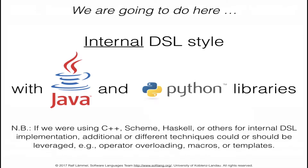We are going to use Java and Python, with different implementations of the finite state machine language — one in Java and one in Python. The details of internal DSL style depend quite a bit on the host language. We might have a slightly different approach using C++, Scheme, Haskell, or other host languages, but we will focus here on relatively straightforward implementations in Java and Python.